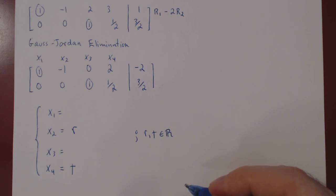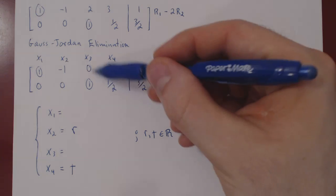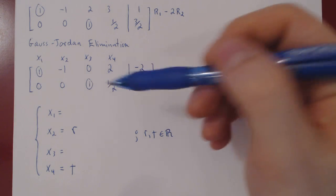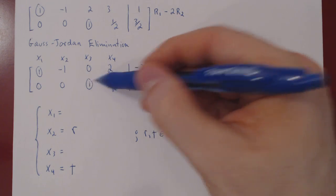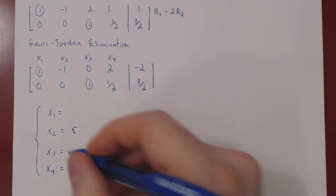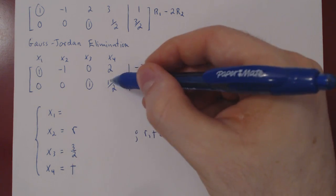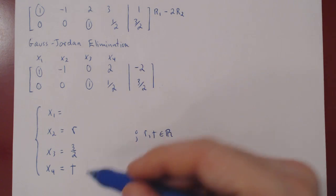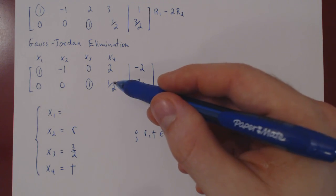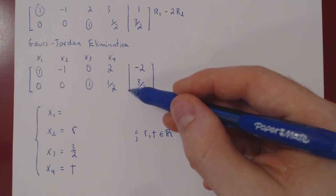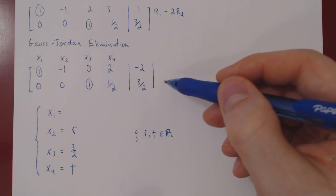And now we solve for the leading variables. Let us solve for x3 using its corresponding leading one. So x3 will equal 3 half. There's a positive 1 half x4, which is 1 half t. If you set this on the other side of the equality, this becomes a negative 1 half t.